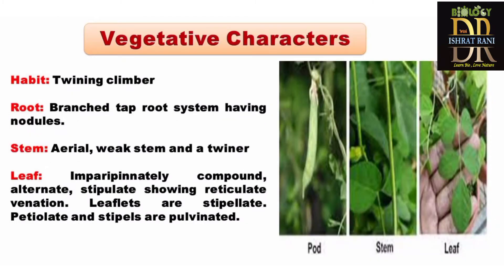For vegetative characters: it is a shining climber. The root is a tap root with branch roots bearing nodules. The stem is aerial, weak, and a twiner. Leaves are imparipinnately compound and alternate, showing reticulate venation.